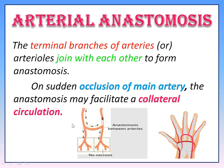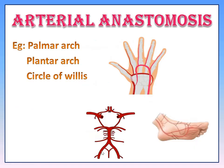Arterial Anastomosis is the communication between two arteries. If any occlusion occurs in a blood vessel, the neighboring blood vessel — that is collateral circulation — gives blood supply to that area, thereby preventing necrosis.